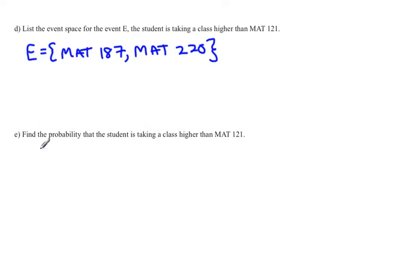Now we can answer the question: find the probability the student is taking a class higher than math 121. So again writing this as a mathematical statement, find the probability that the class is higher than math 121. So that's the event we're looking at.